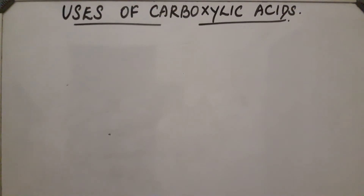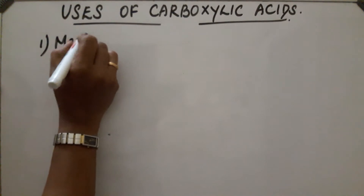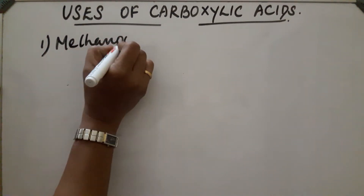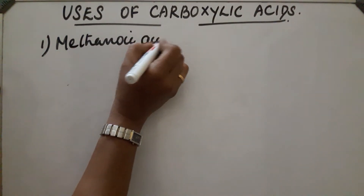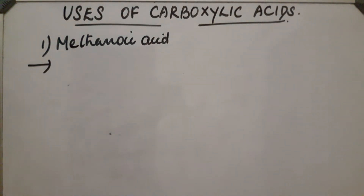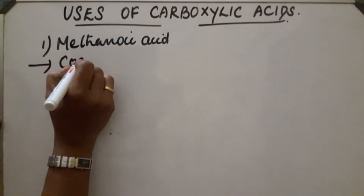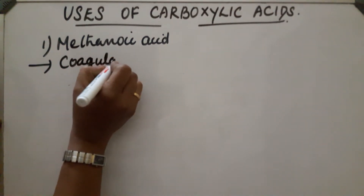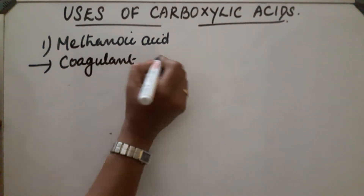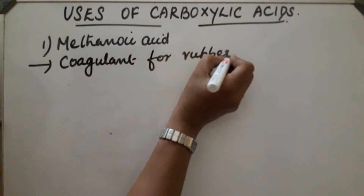Uses of carboxylic acids. First, methanoic acid or formic acid. It is used as a coagulant for rubber latex.